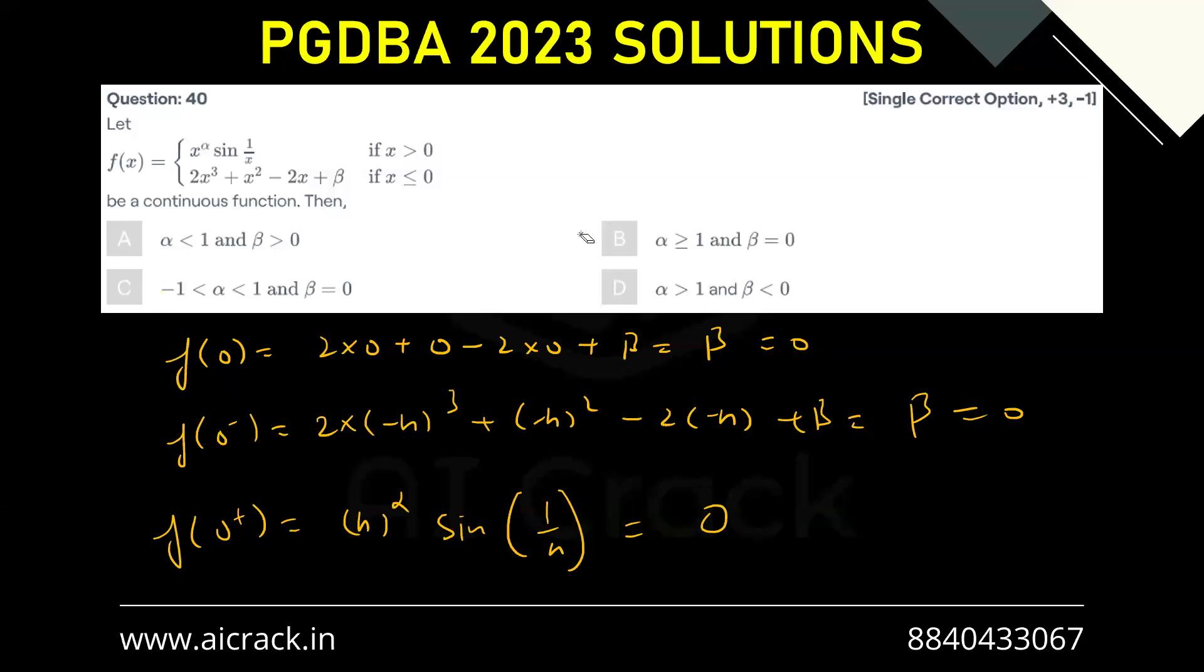Now if we take some negative value of alpha in that case this won't be 0 right. Think in this manner. Let's say we have h equals 0.0001. If we take some value let's say minus 1 by 2, in that case this would become 1 upon 0.0001 raised by 1 by 2. Now this is not finite. This is very large number. This is not close to 0. This is very large number. In that case our hypothesis won't be true. In that case we can say b should be the correct answer.